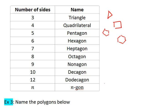For example, a 20-sided figure is called a 20-gon.